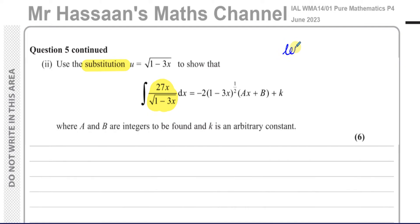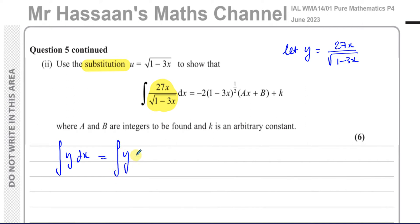The method I use: I'll take whatever is being integrated and call it y. So let y equal 27x over the square root of 1 minus 3x. Our objective is to integrate that y function with respect to x. To introduce another variable u, we write the integral as y times (dx/du) du — this is effectively the same as dx — but we must express everything in terms of u.